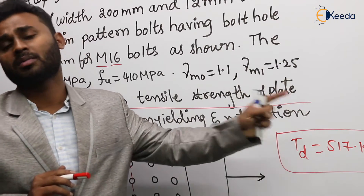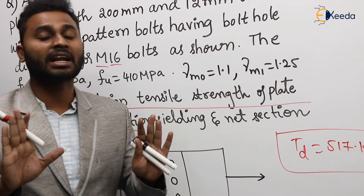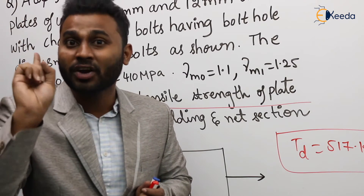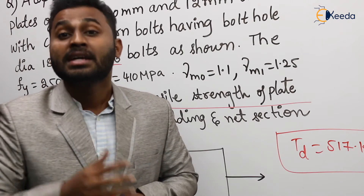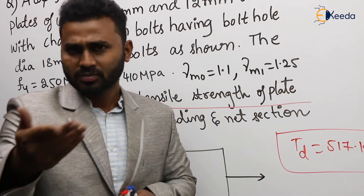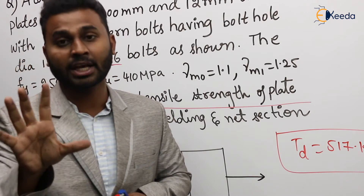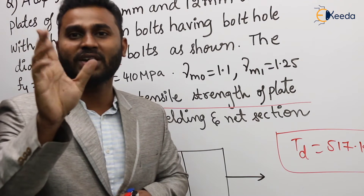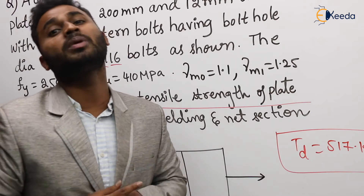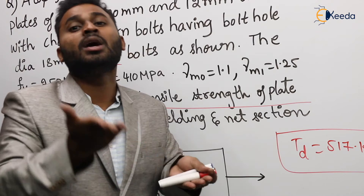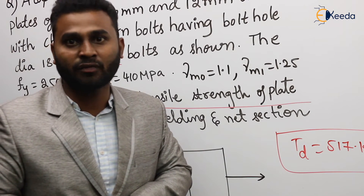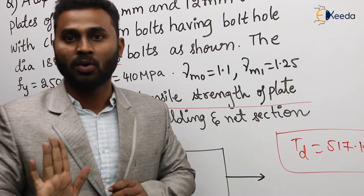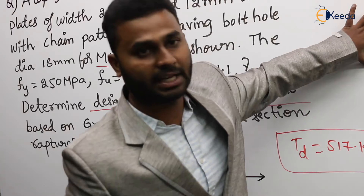Block shear is not a regular kind of failure. Block shear failure occurs only if we are using high-strength materials — high-strength steel and high-strength bolts. When high-strength bolts are used, the number of bolts for a connection is reduced, and upon reducing the number of bolts and the length of the connection, block shear failure can occur. So it is not a regular kind of failure.